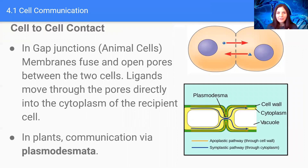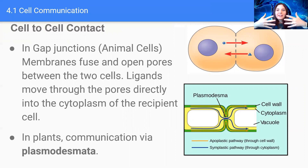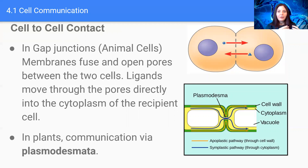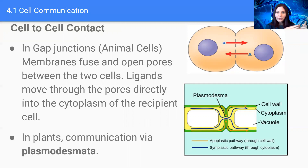Another type of cell-to-cell contact is called gap junctions in animals and plasmodesmata in plants. These are basically pores from adjacent cells, meaning that molecules from the cytoplasm of one cell can traverse into the next cell. The same thing happens in plant cells — adjacent cells can form these pores through which they can communicate by sending signaling molecules back and forth.